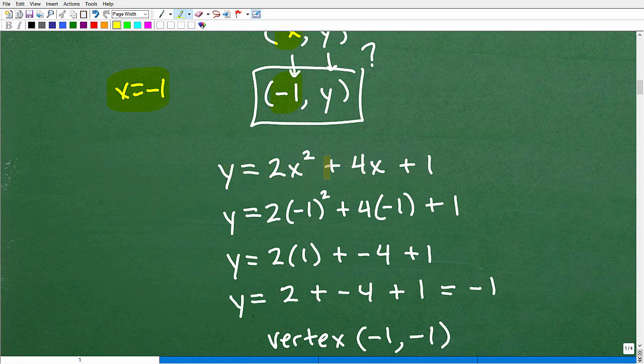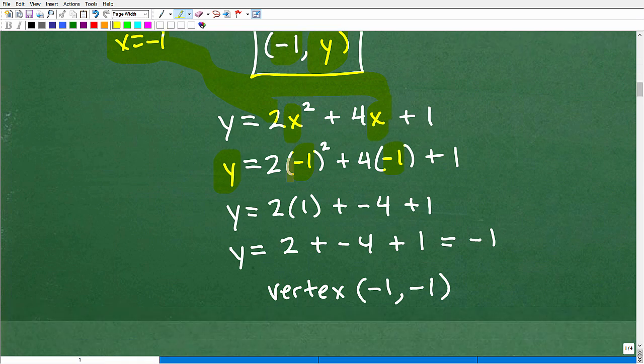So remember, our equation is Y equals 2X squared plus 4X plus 1. Where these X's are, I'm going to plug in this negative 1. So that's what I'm going to do, and when I do this math, I'm going to get Y. I'm going to get the Y coordinate. Pretty straightforward stuff. So let's go ahead and do this. Got to be very careful. Make sure you know your order of operations.